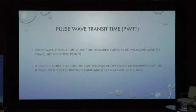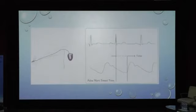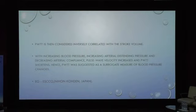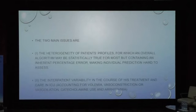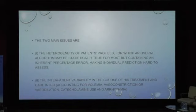Pulse wave transit time is the time required for the pulse pressure wave to travel between two points, estimated from the R-wave of the ECG to peripheral detection. It is inversely correlated to velocity and volume — with increasing blood pressure, arterial distending pressure, and compliance, pulse wave velocity increases and transit time shortens. It is suggested as a surrogate marker of blood pressure changes, used with the ESCO device. Limitations include heterogeneity of patient profiles and interpatient variability, with hypovolemia, vasoconstriction, and vasodilation all affecting results.